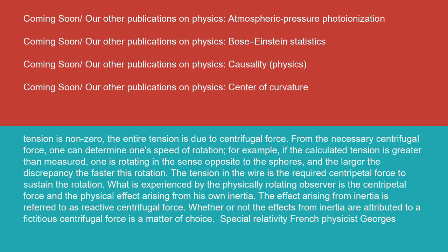For example, if the calculated tension is greater than measured, one is rotating in the sense opposite to the spheres, and the larger the discrepancy, the faster this rotation.